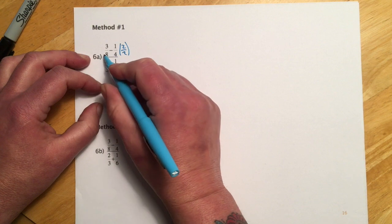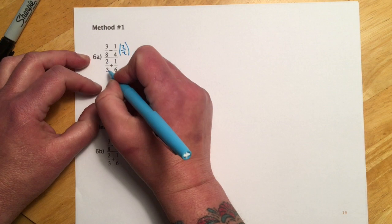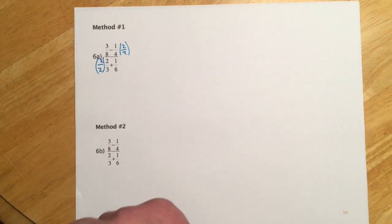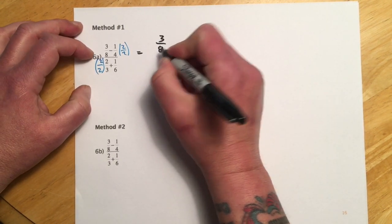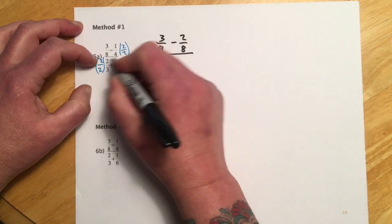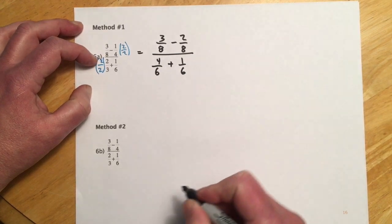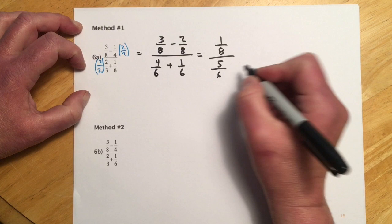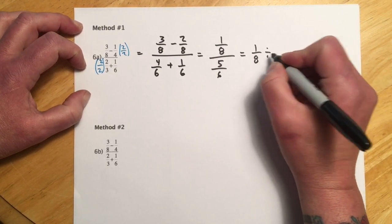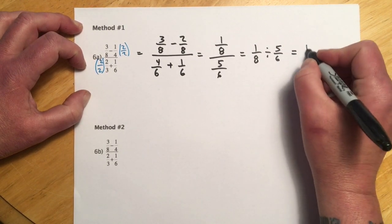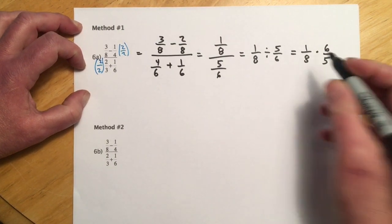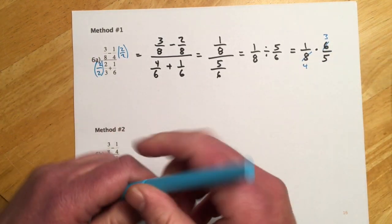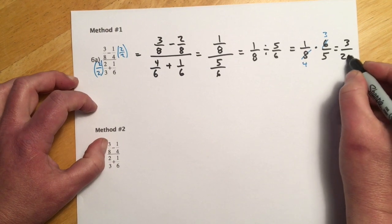I'll show method 1 on this example. I've got 8ths and 4ths on top, so I need a common denominator of 8. For the bottom I need 6ths — slip a 2 over 2 in there. That becomes 3 eighths minus 2 eighths over 4 sixths plus 1 sixth. Collecting terms: 1 eighth over 5 sixths. That's 1 eighth divided by 5 sixths — flip the fraction: 1 eighth times 6 fifths. Reduce: 2 goes into 8 four times, 2 goes into 6 three times. Result: 3 twentieths.